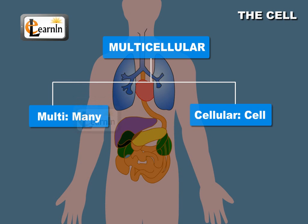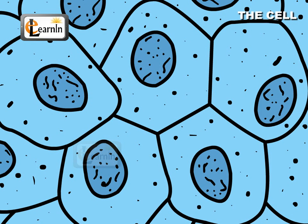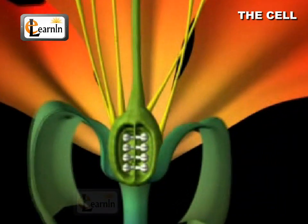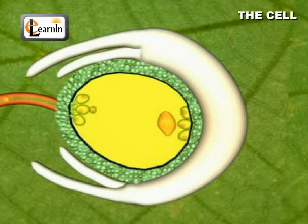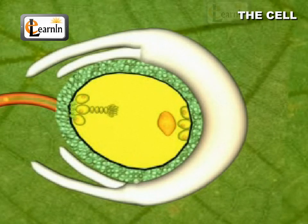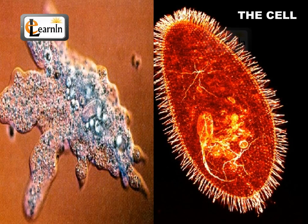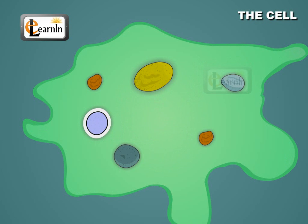Multi means many and cellular means cell. The functioning of an organism, however, remains unaffected even if the number of cells in that organism is comparatively lesser. The life of every organism begins with a single cell. It is a fertilized egg that multiplies and thereby the number of cells increase as the organism develops. There are also organisms that are made up of a single cell and are therefore called unicellular organisms.